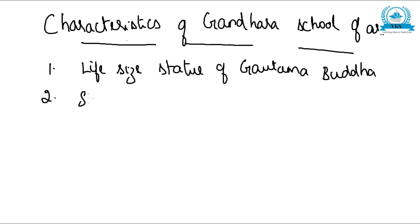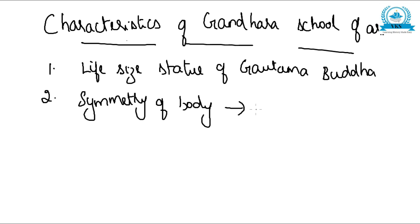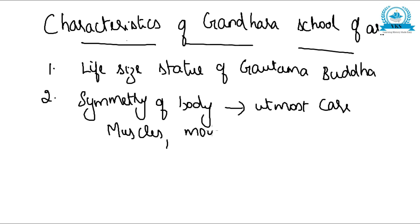The second characteristic: utmost care was given to the symmetry of the body when the statues were made. The symmetry of the body was carved with utmost care. For example, the muscles and mustaches were all shown in natural settings. That was the second characteristic — utmost care was given to the symmetry of the body, and muscles and mustaches were shown in a natural setting.